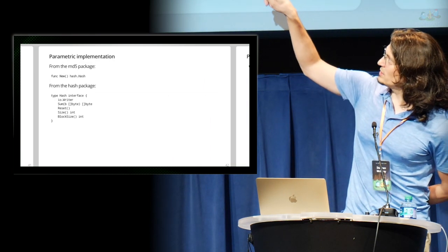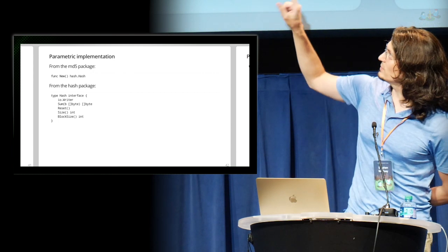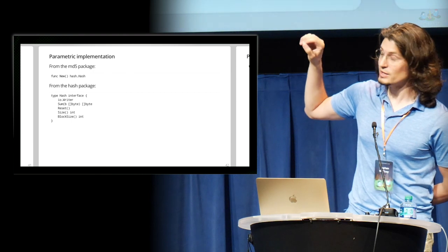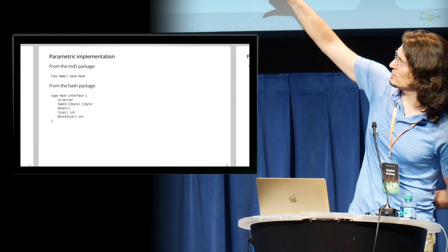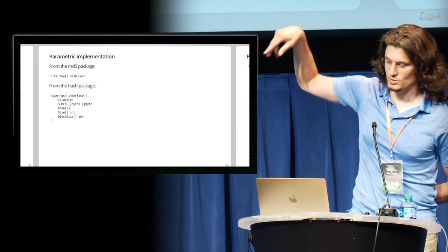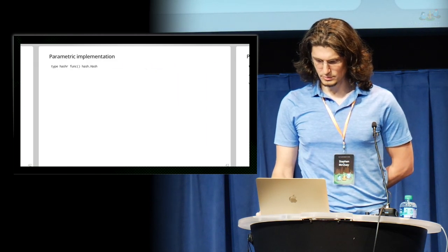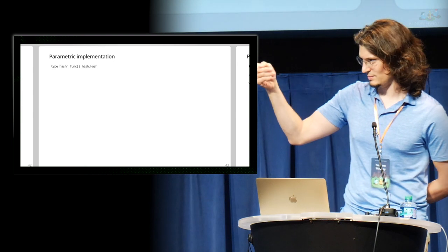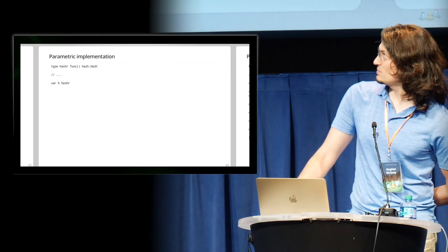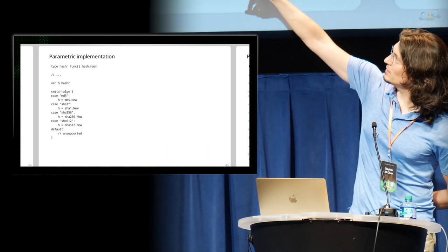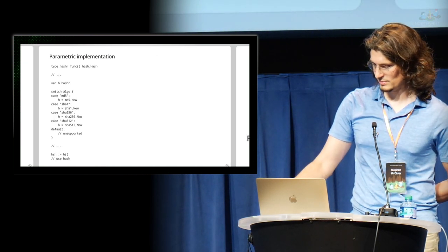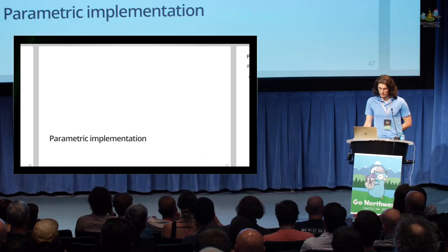In the very top block, one of the exported functions in the MD5 package is .New(), and it returns a hash.Hash. Interestingly, hash.Hash is not a struct — it's an interface type. It embeds io.Writer, inheriting anything from the io.Writer interface, and adds additional methods. So we can make a pluggable hash function: declare a variable of type hash.Hash, switch on the algorithm — if it's SHA1, assign SHA1.New() — and just use it. This gives us a parametric implementation leaning on interfaces.